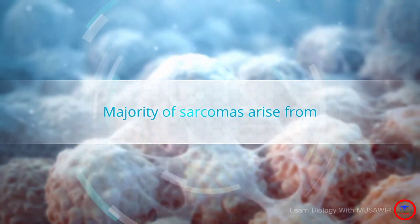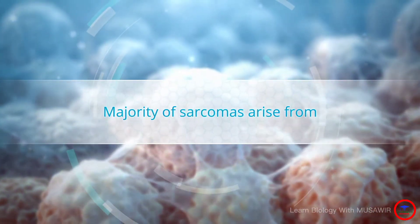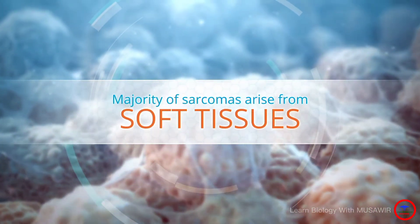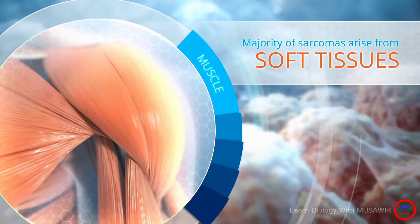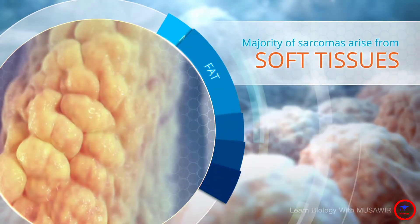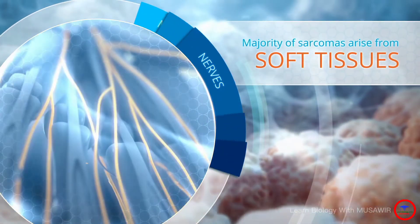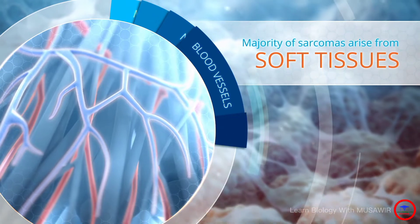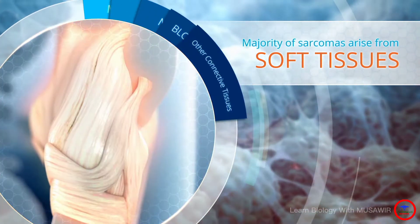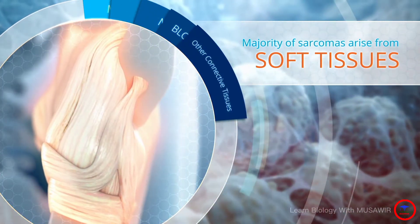The majority of sarcomas however arise from soft tissues including muscle, fat, nerves, blood vessels and other connective tissues.